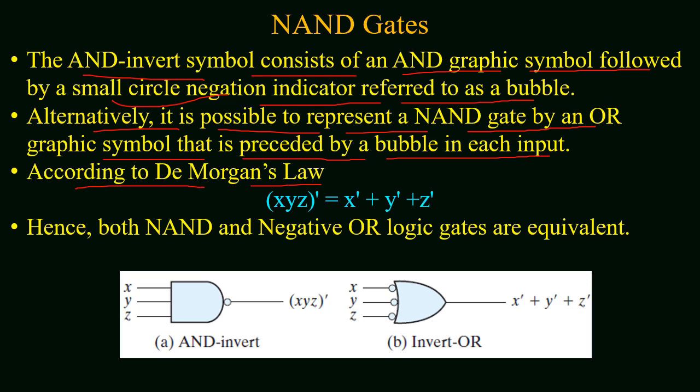If we have an expression (X · Y · Z)', according to De Morgan's law this will be equal to X' + Y' + Z'. The same logic is implemented for the alternative representation of a NAND gate, so both NAND and negative-OR logic gates are equivalent, as shown in the figure.